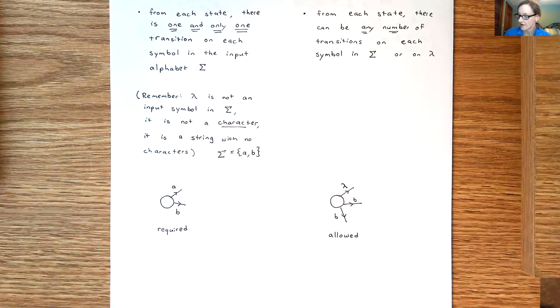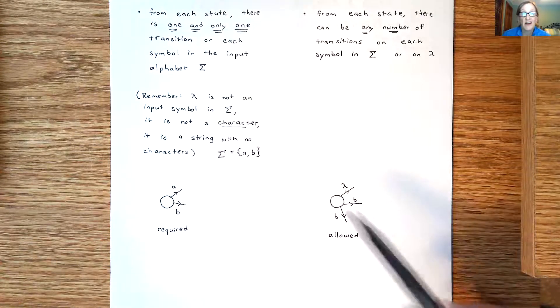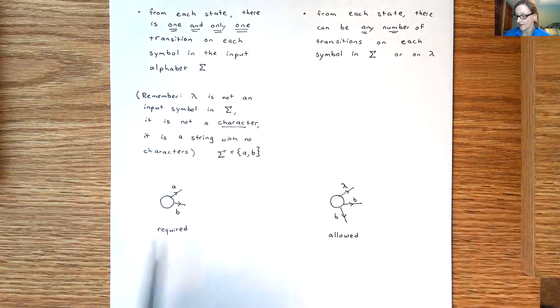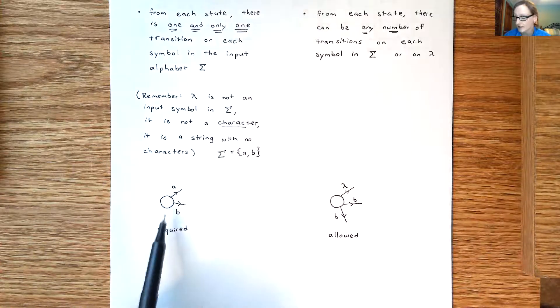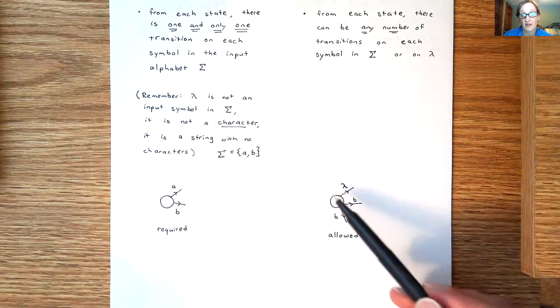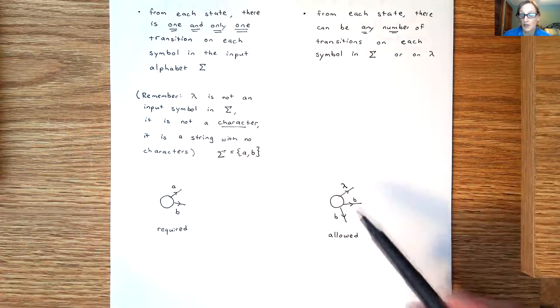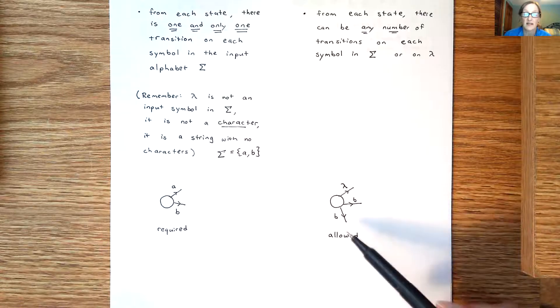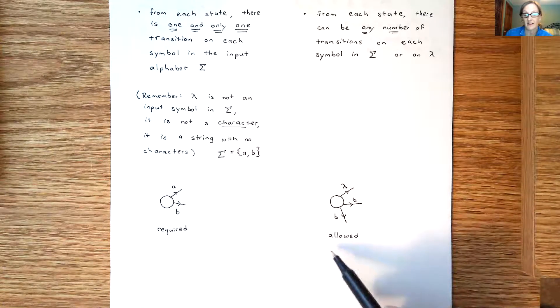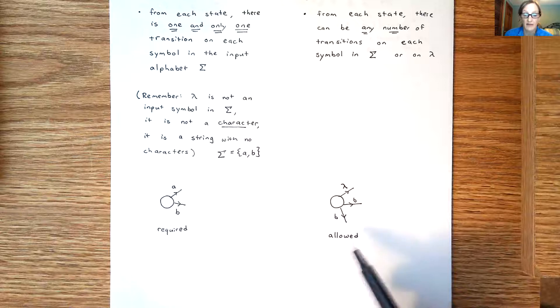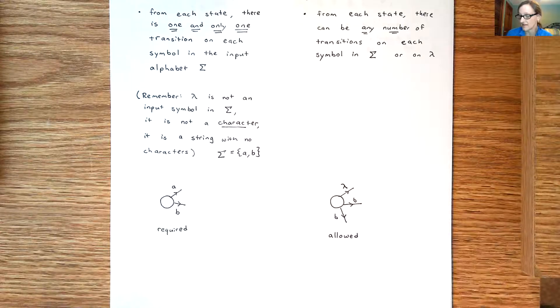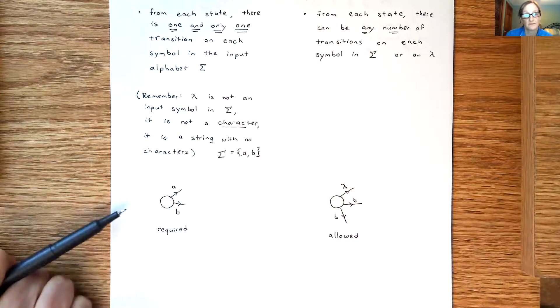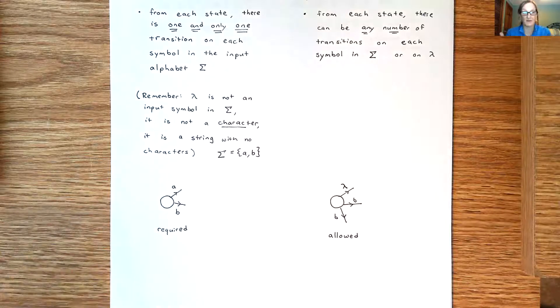For an NFA there's all kinds of things that are allowed. We could have this kind of situation that would be fine, but you could also have transitions on lambda, you could have no transitions on an A, and you can have multiple transitions on a B. So this is the way I like to think of it: here's what's allowed for an NFA, for DFA here's what's required.